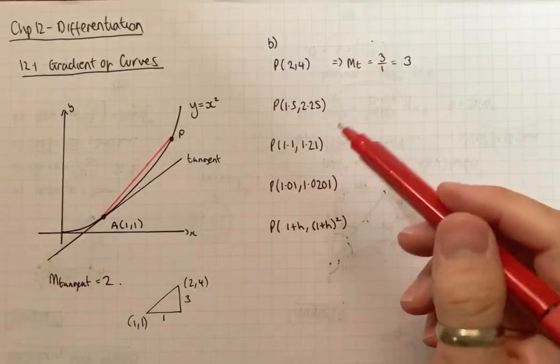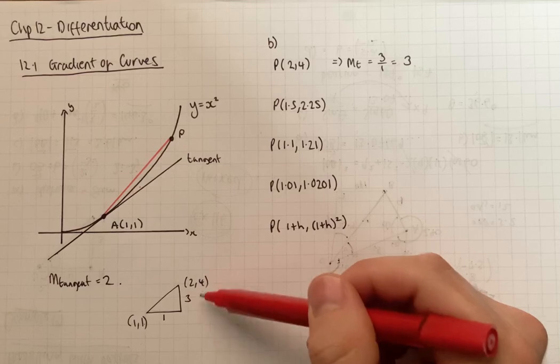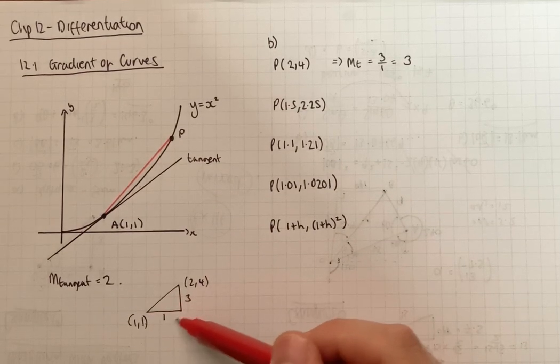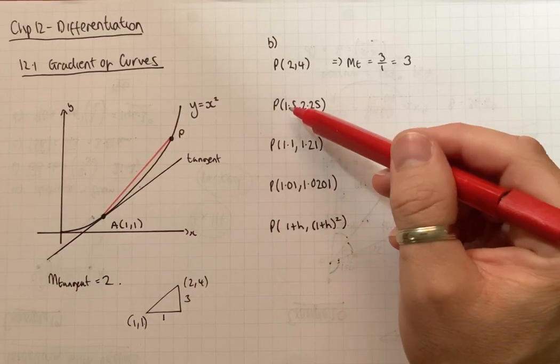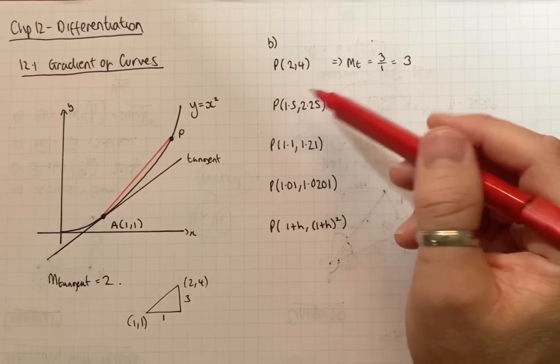So what we're going to do then is work out the change in Y divided by the change in X. So it's going to be the Y-coordinate take away 1 divided by the X-coordinate take away 1 in each case.